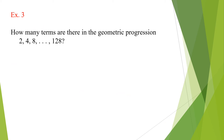Another illustrative example: how many terms are there in the geometric progression 2, 4, 8, ..., 128? We take note that a is equal to 2. Examining the common ratio: 4 divided by 2 gives a common ratio of 2, and 8 divided by 4 is equal to 2. So r is equal to 2.